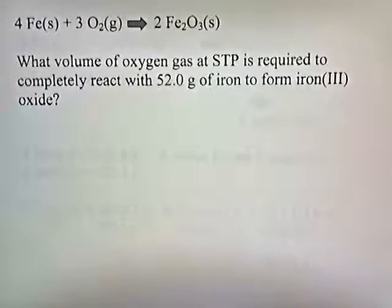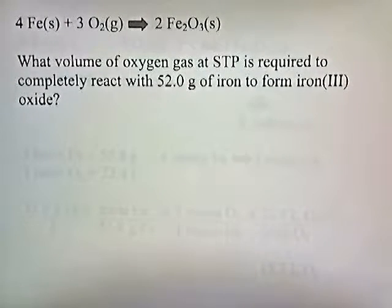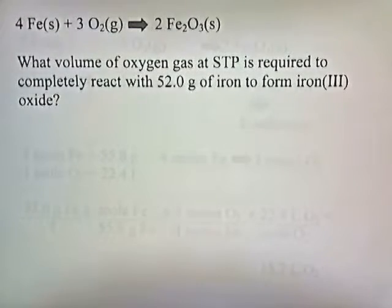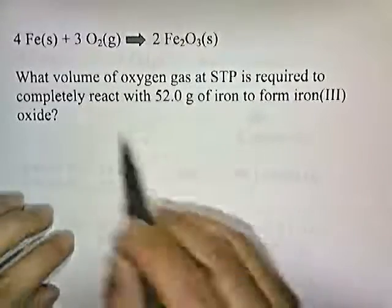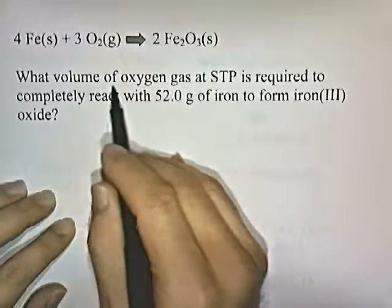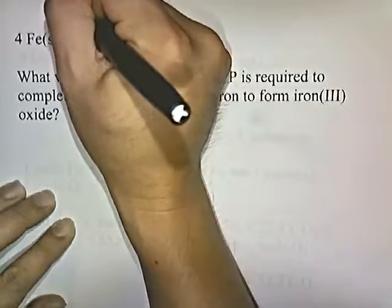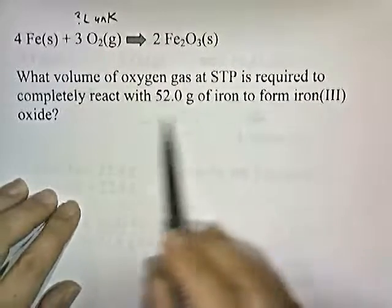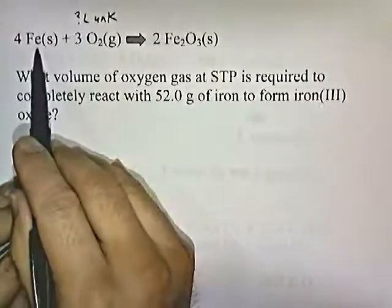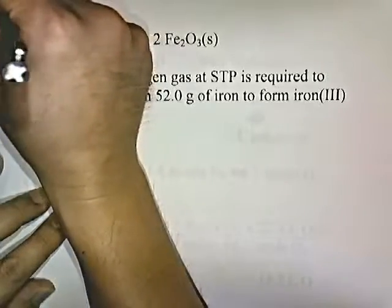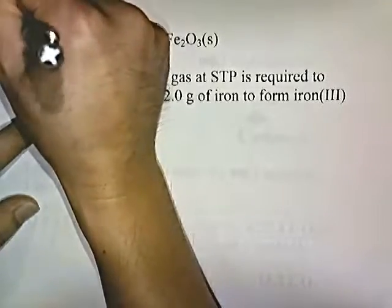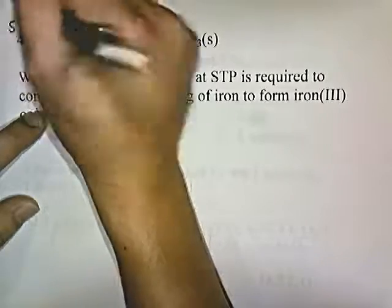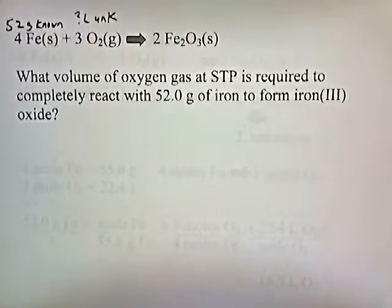Let's try another problem. What volume of oxygen gas at standard temperature and pressure is required to completely react with 52 grams of iron to form iron(III) oxide? Let's identify our known and unknown. They're asking for the volume of oxygen gas — that's the unknown. They tell us we have 52 grams of iron — that's our known.